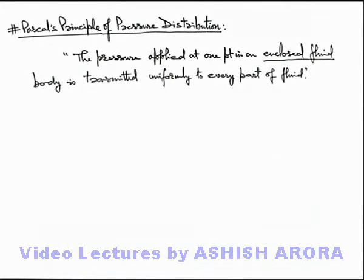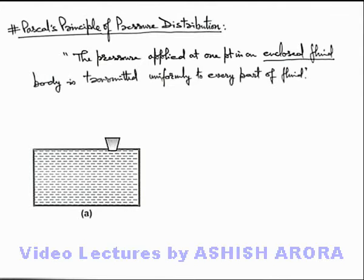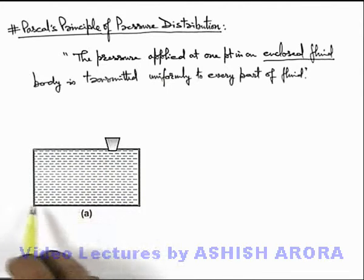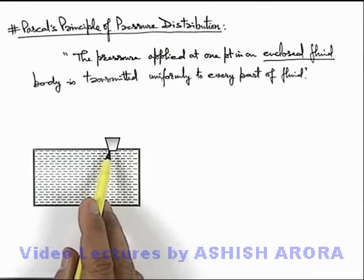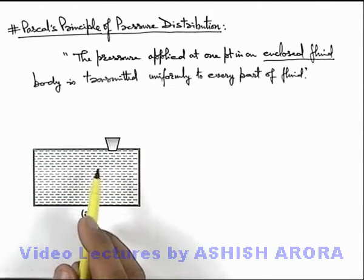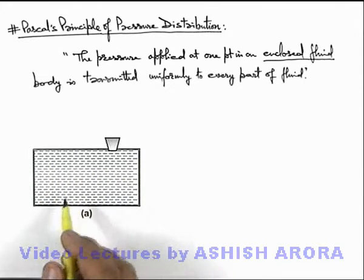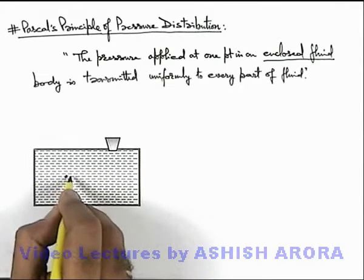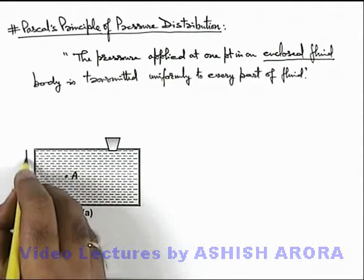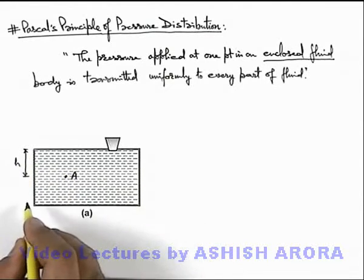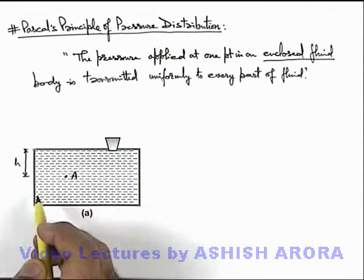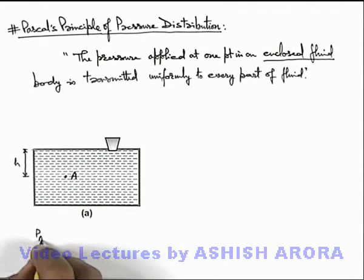Let's discuss the situation to understand it better. We are given a container completely filled with a liquid and it is closed with a cork at its mouth. It is not open to the atmosphere anywhere. If we consider a point A in the fluid body, located at a depth h below the top layer of the liquid, then pressure at point A is given as h·ρ·g.